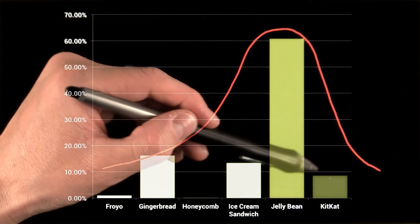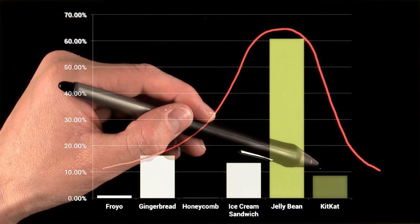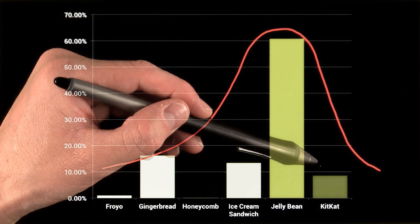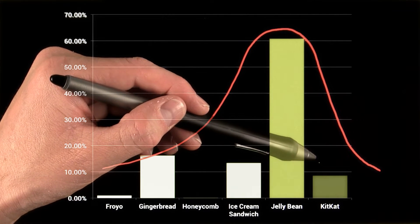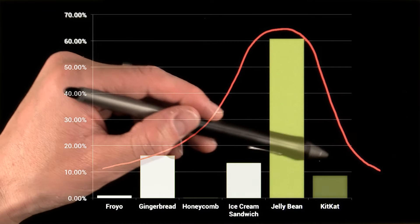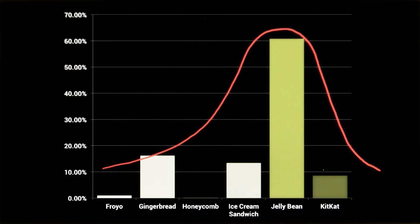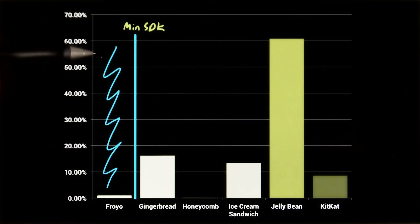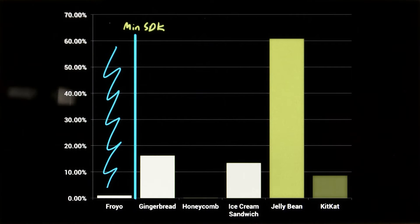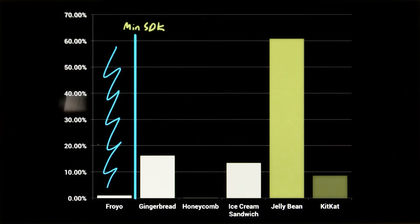And the newest platforms, gaining popularity as new phones are released or upgrades go out, are here on the right. So with that in mind, the min SDK acts as your low pass filter. Google Play won't show your app on devices running a platform version lower than this minimum SDK version.